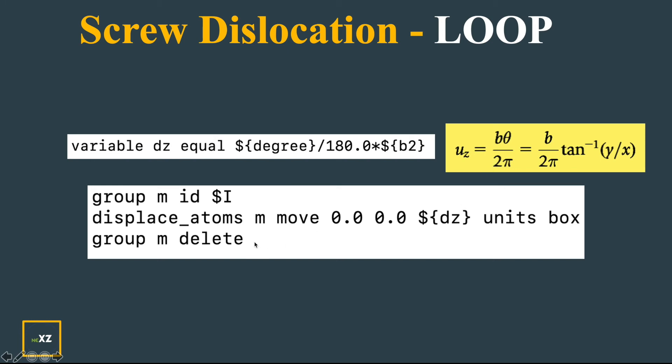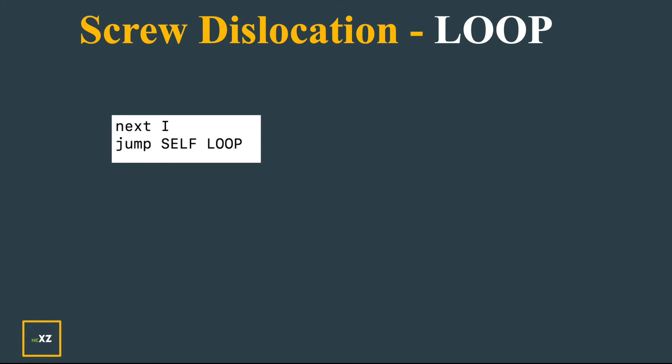Now I delete the group so I can use the group m again in the loop. So I go to the next i, meaning the next atom, and jump self loop so that it jumps again into the loop.